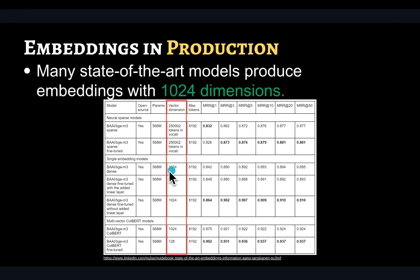Most of the bigger or state-of-the-art embedding models use a size of 1024. There are some smaller embedding sizes of 384 and 768 as well. This embedding size determines how much storage you will need.